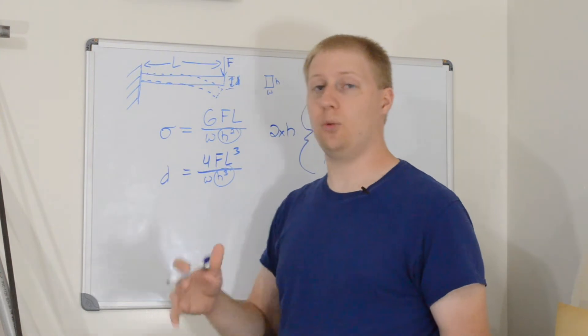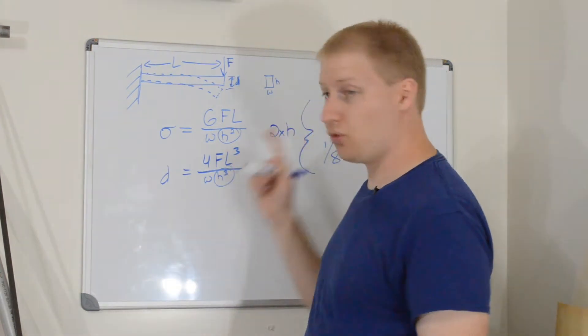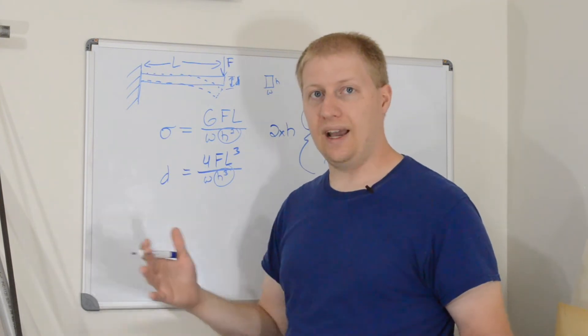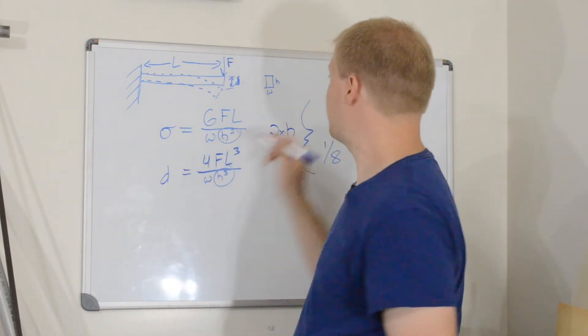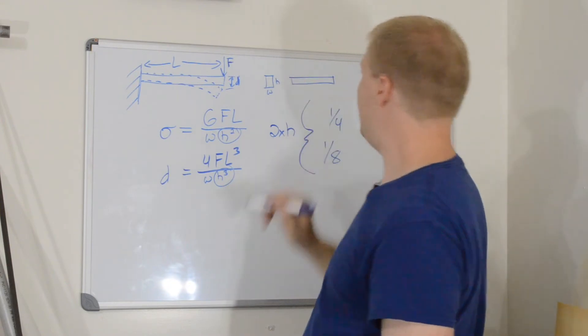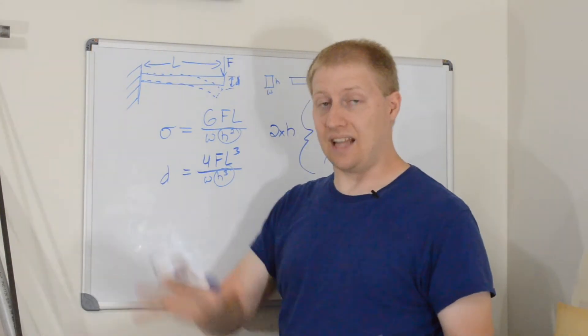So, what you would generally tend to want to do then, if you want a beam that is strong but also very flexible, you want it to be very wide and very short. You want a beam that looks perhaps more like this. Does that make sense? I hope so.